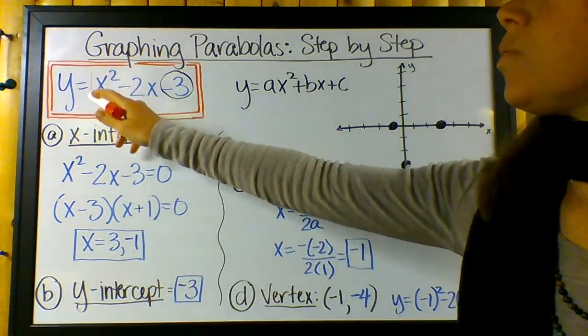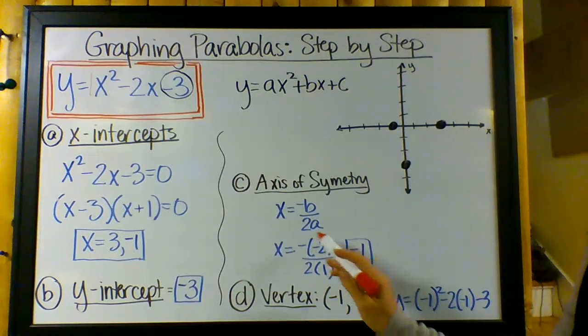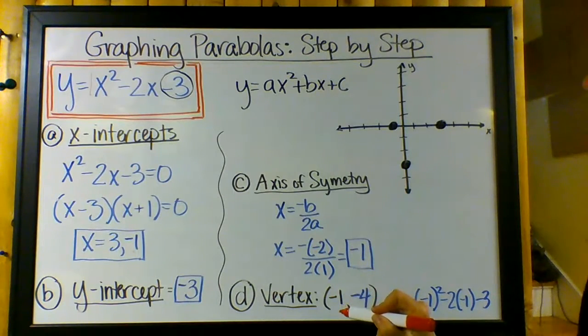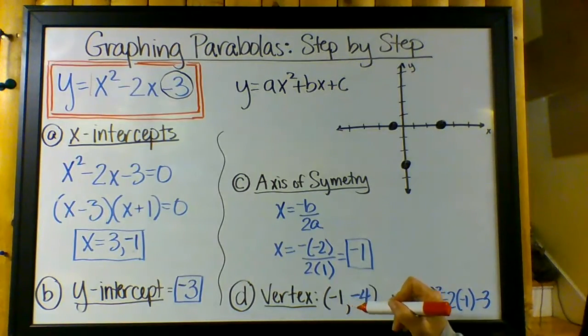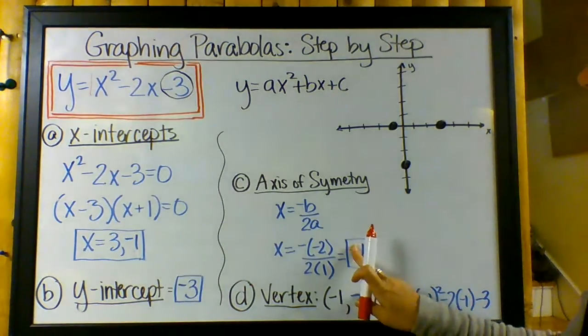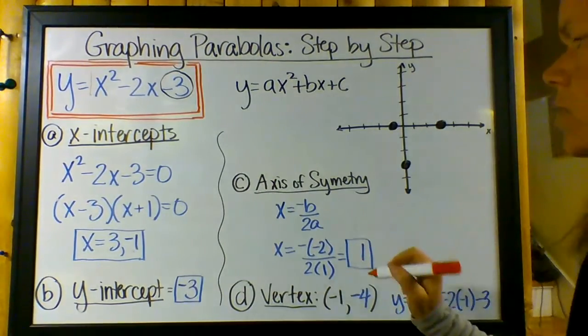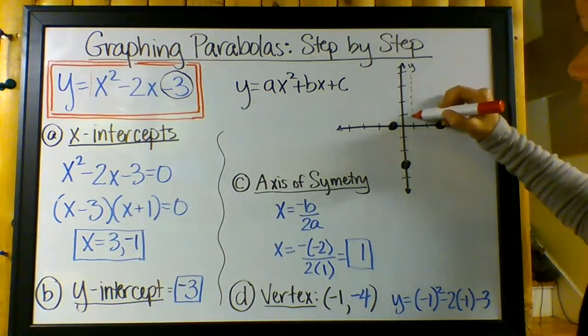So we're looking at y equals negative b. So I plugged in negative negative 2 over 2a. a here is this invisible 1, so over 2 times 1. So if I, negative negative 2 is positive 2 over 2, and so that should equal positive 1. And I have negative 1 here, which is wrong. So I found my mistake. Good. This equals negative 1, and that matches up with my graph, which comes down here.